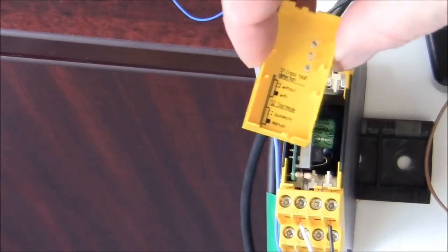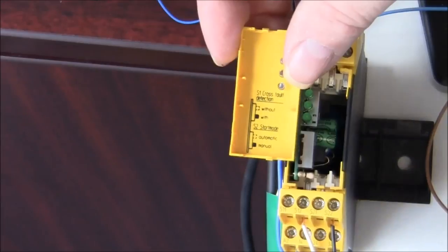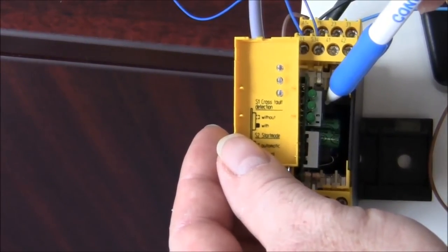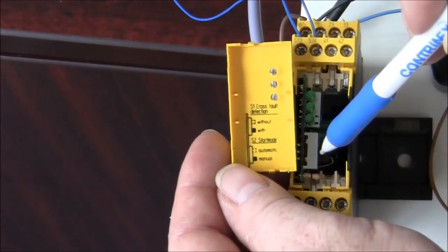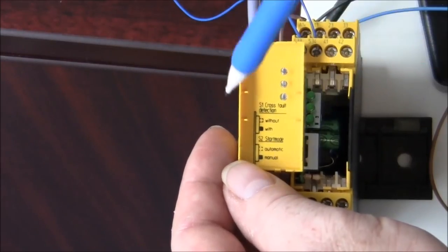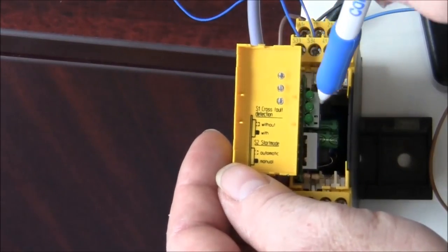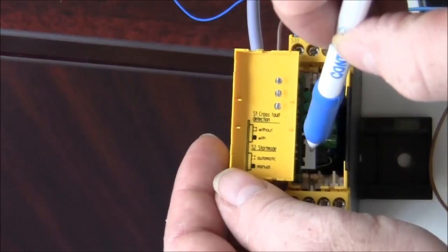On the reverse side of this panel, it will show you the positions of S1, which is right here, and S2 right here. I don't know if you can read it, but this says automatic or manual position, without or with. And the drawings show that in both cases, this goes to without, and this is the only one that you change. So for manual mode, we switch that down to manual.